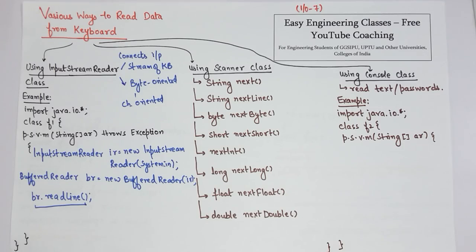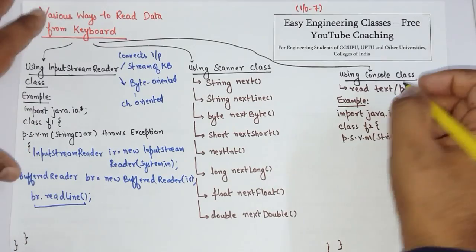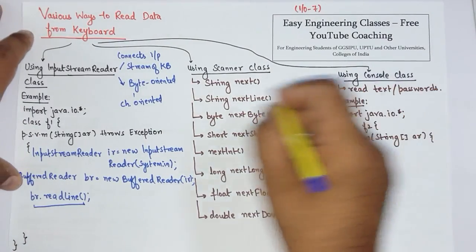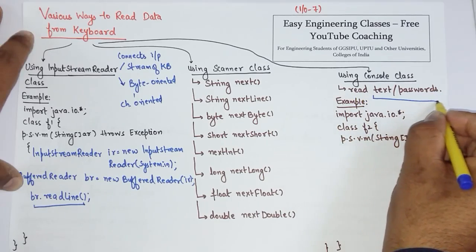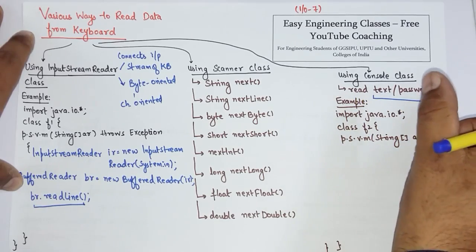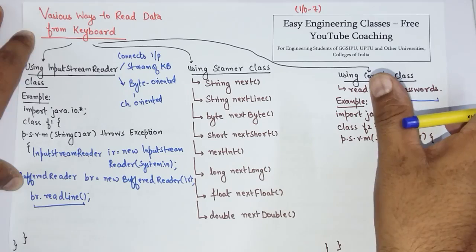There are other methods available as well, which you can read from the Java documentation. The next type is using the Console class. The Console class can also be used to read input from the user. The main difference is that the Console class provides methods to read both text and passwords.